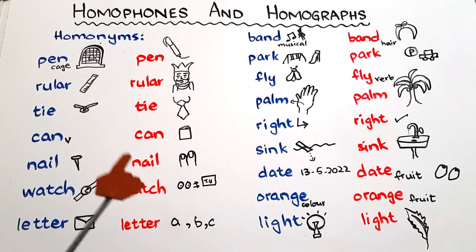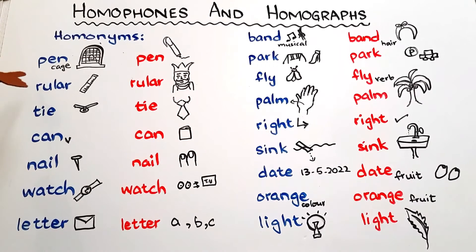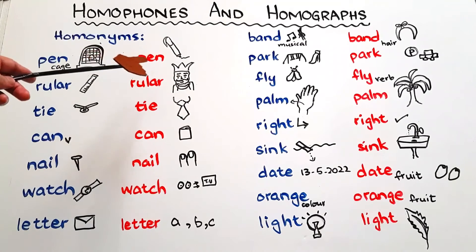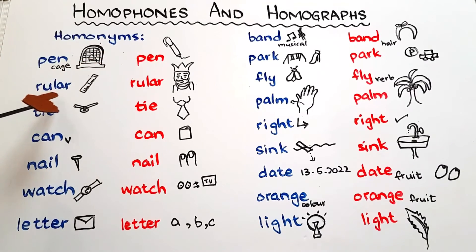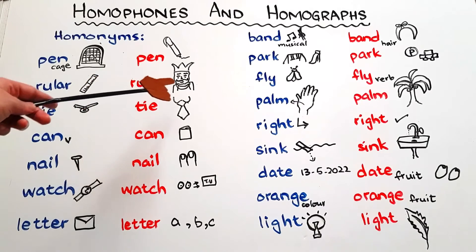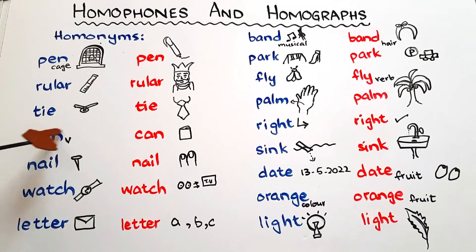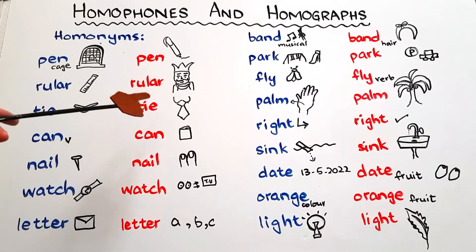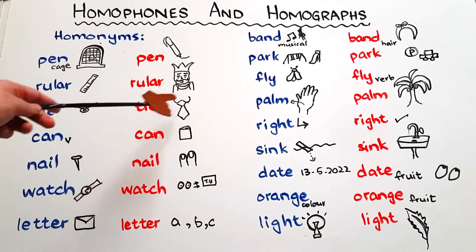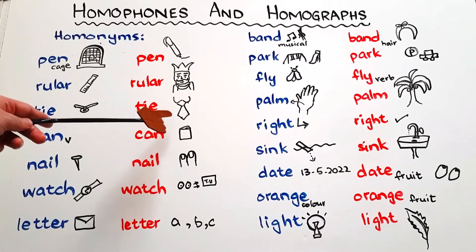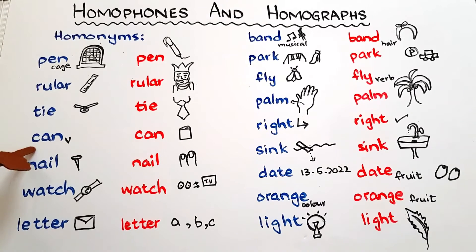Here is a list of homonyms — same spelling, same sound, but different meanings. 'Pen' — a cage for animals — and 'pen', the one we write with. 'Ruler' — the scale we use in stationery — and 'ruler', a king. 'Tie' — when you tie a knot or bind something — and 'tie', the noun, something we wear around our neck. 'Can' — the modal verb used for ability, as in 'I can do it'.